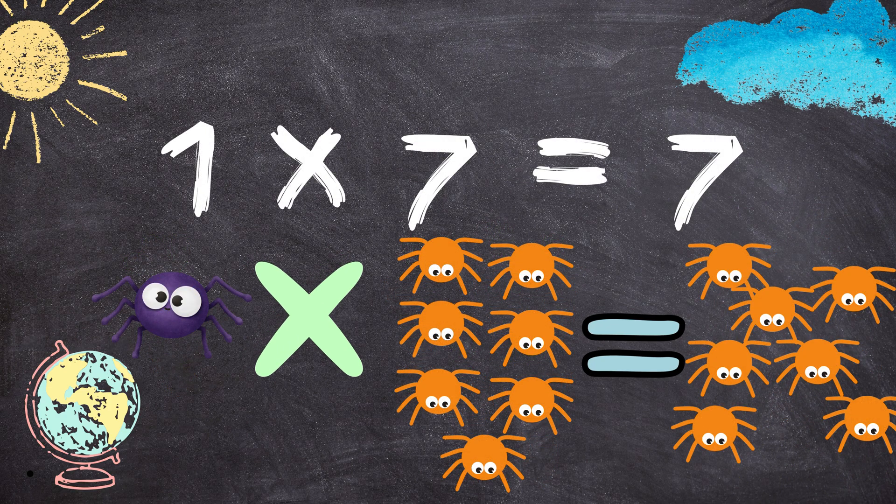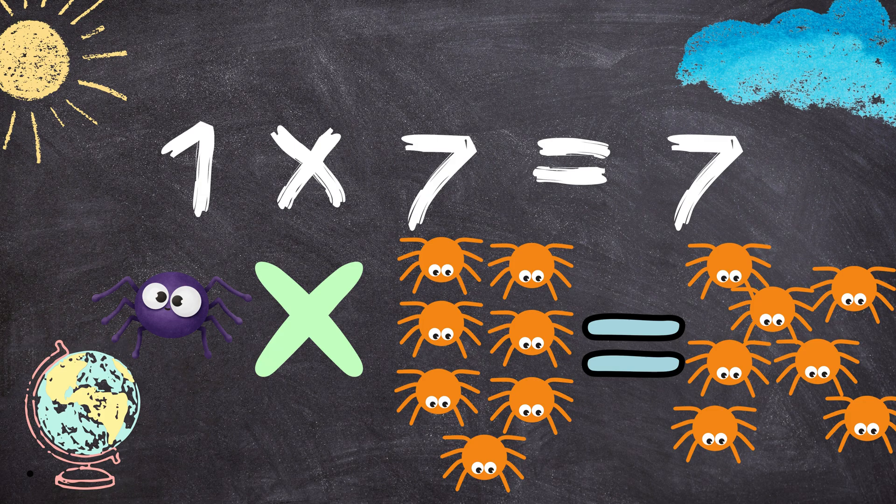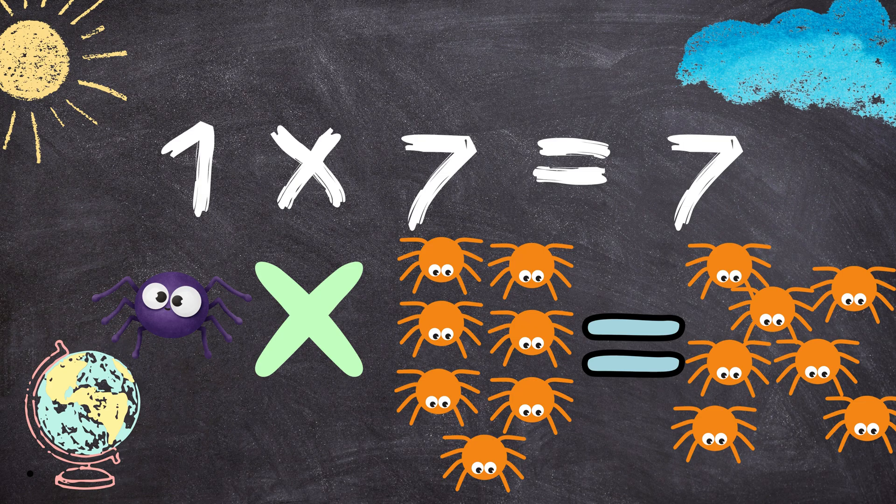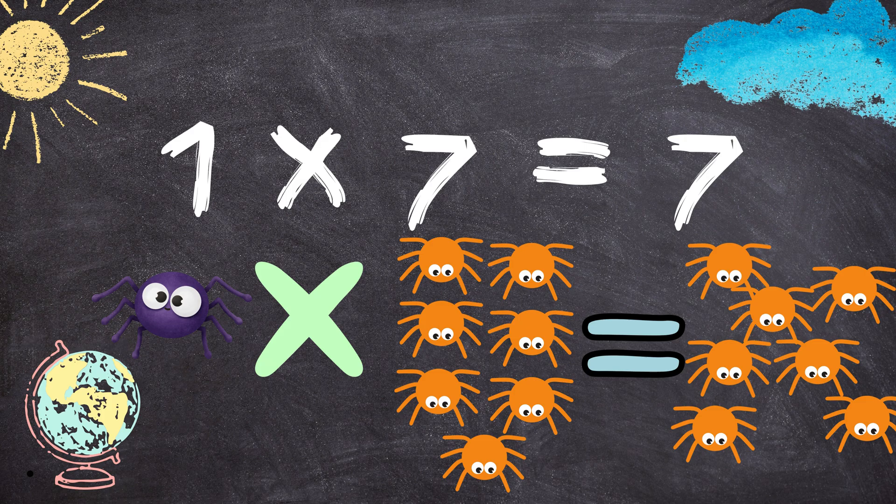1 times 7 equals 7. 1 spider multiplied by 7 spiders equals 7 spiders: 1, 2, 3, 4, 5, 6, 7.